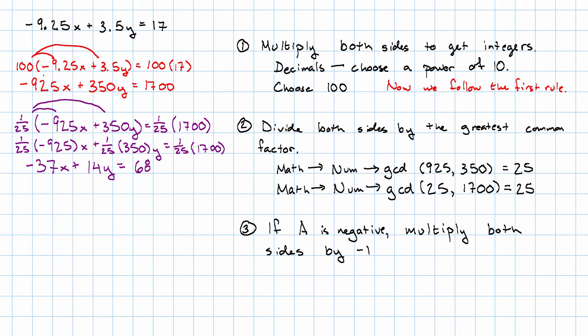So I'll have negative 1 times negative 37x plus 14y is negative 1 times 68. Distribute. I'll have 37x minus 14y is negative 68. And now the coefficient of x is positive. I follow all three rules. I'm in standard form.